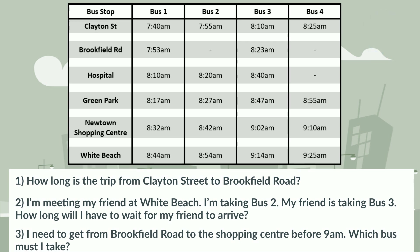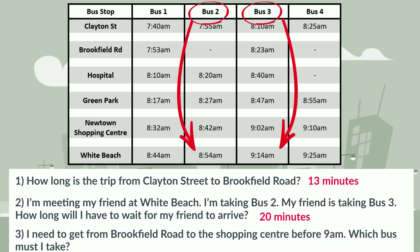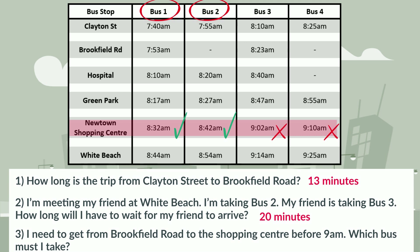Let's check the answers. Question 1: The difference in time between Clayton Street and Brookfield Road is 13 minutes. Question 2: If I take bus 2, I arrive at White Beach at 8.54 a.m. If my friend catches bus 3, they will arrive at 9.14 a.m., which means I will have to wait 20 minutes. Question 3: Buses 1 and 2 get into the shopping centre before 9 o'clock. However, bus 2 doesn't stop at Brookfield Road, so the answer is bus 1.